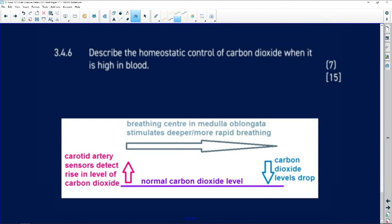Describe the homeostatic control of carbon dioxide when it is high in the blood. When the carotid artery, which is in your neck, those sensors detect a rise in the level, high carbon dioxide in the blood, the breathing center in the medulla oblongata stimulates deeper, more rapid breathing. You take deeper breaths and you're breathing more rapidly, like you do when you are exercising. This gets more oxygen in, so our carbon dioxide levels drop back down to normal.